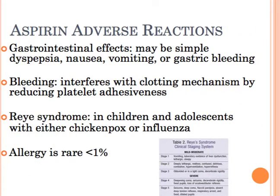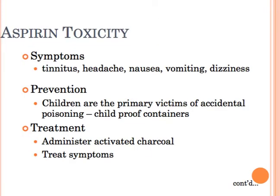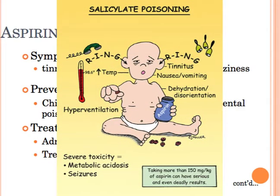The incidence of a true allergy to aspirin is less than 1%, but patients with asthma are more likely to be allergic — that could be 5% to 15%. An overdose of aspirin can produce harmful effects and even death. A patient can have ringing in the ears, headache, nausea, vomiting, dizziness, dimness of vision, hyperthermia, or an electrolyte imbalance.